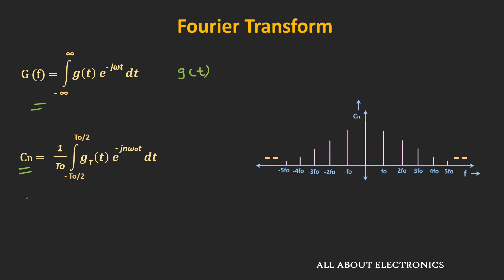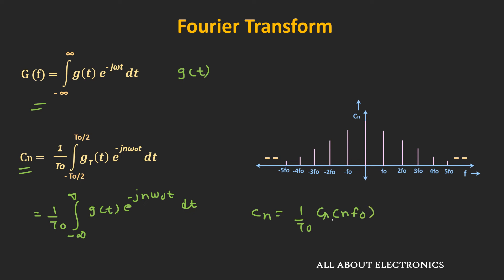As noted earlier, cn can be written as 1 over T0 times the integral from minus infinity to infinity of g(t) times e to the power minus j·n·ω·t dt. Comparing this with G(f), we can write cn equals 1 over T0 times G(n·f0). This expression shows the samples of the continuous function G(f) taken at intervals of f0. For example, putting n=1 gives c1, which is the sample of G(f) at f0; by putting different values of n, we get samples of G(f) at different intervals.